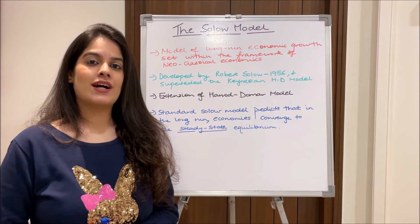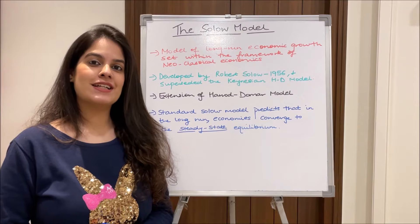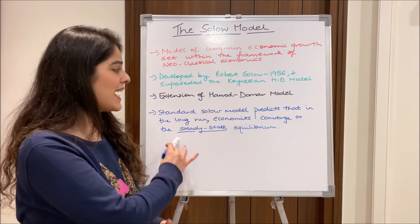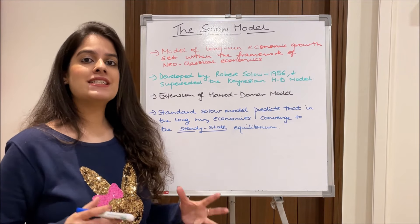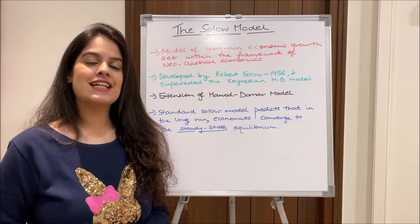I've also made a video regarding the Harrod-Domar model. I'll attach the link in the comment section below. So basically the standard Solow model predicts that in the long run the economies tend to converge to the steady state equilibrium.